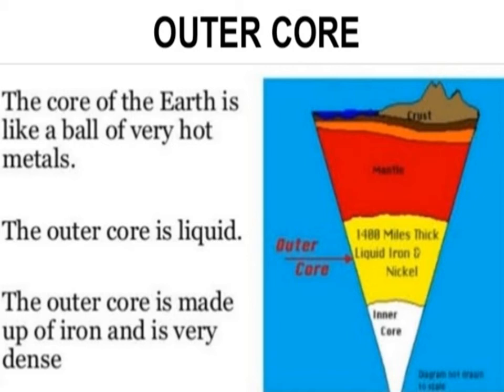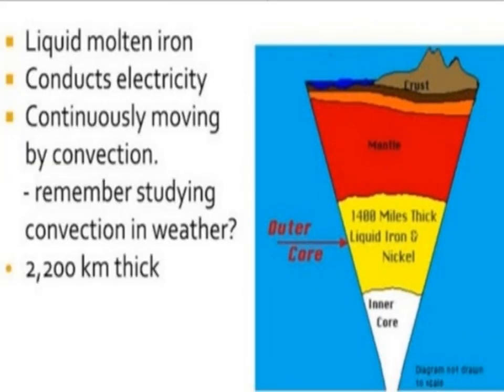The outer core creates something called a magnetic field, forming a protective barrier around the Earth that shields us from the Sun's destructive solar wind. The outer core is liquid molten iron and conducts electricity. Its thickness is about 2,200 km.